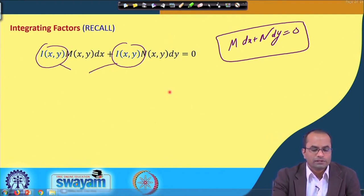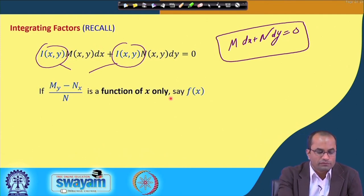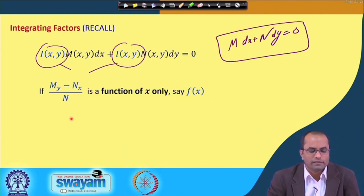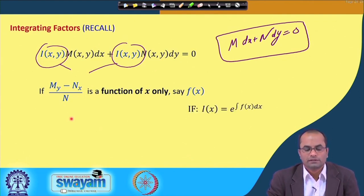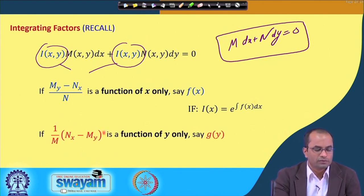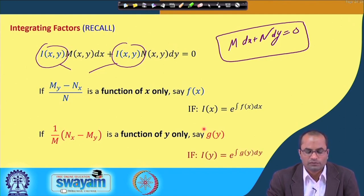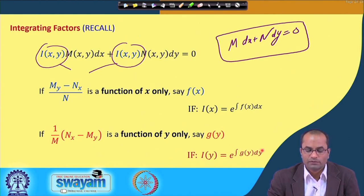We also saw how to evaluate the integrating factor in some special cases. One of them was that if (M_y - N_x) / N is a function of x only, say f(x), then the integrating factor can be evaluated simply as e^(∫f(x) dx). Also, if (1/N)(N_x - M_y) is a function of y only, say g(y), then the integrating factor is μ(y) = e^(∫g(y) dy).